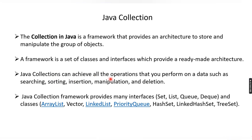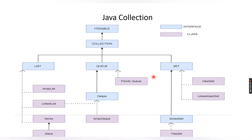Java collections can achieve all the operations you perform on data — searching, sorting, insertion, manipulation, and deletion. This is the answer to what Java collection is. Another important question is: what is the need for the collection framework? Why do we need this collection framework in Java? To understand this, let's consider an example.